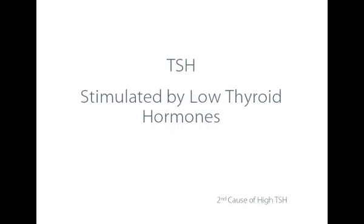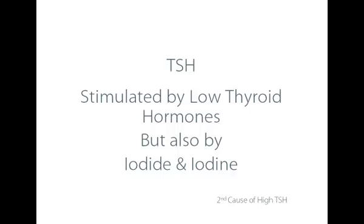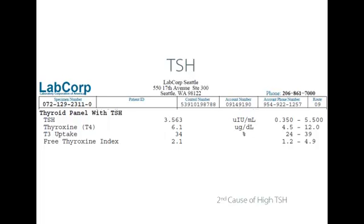Remember that TSH is stimulated when thyroid hormones decline, but also the production of TSH is stimulated when we take higher doses of iodide and iodine. Here's a lab report on a 53-year-old woman. You can see that her TSH level is 3.56, which is a little bit higher than optimal — it should be around 2.0.